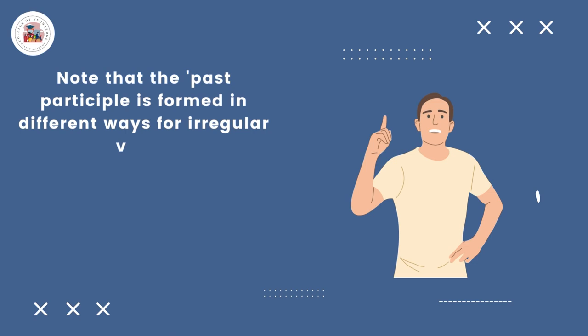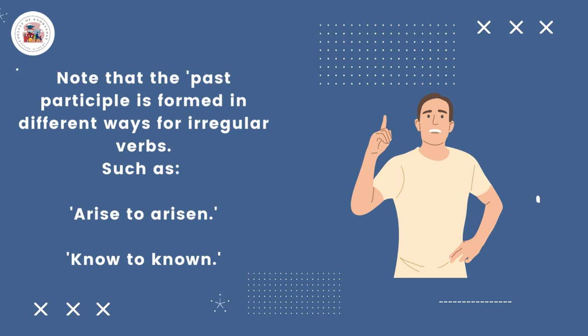Note that the past participle is formed in different ways for irregular verbs. Such as: arise → arisen, know → known.